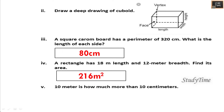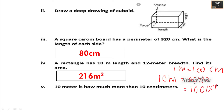A rectangle has 18 meter length and 12 meter breadth — how much more is 10 meter than 10 centimeter? To compare two units you should have the same unit. Convert 10 meter to centimeters: 1 meter equals 100 centimeters, so 10 meter equals 1000 centimeters. Subtract 1000 minus 10, that is 990 centimeters. So 10 meter is 990 centimeters more than 10 centimeters.